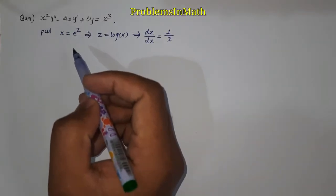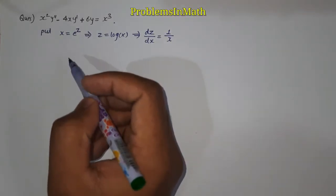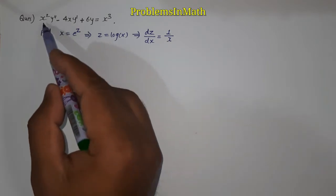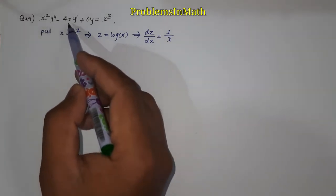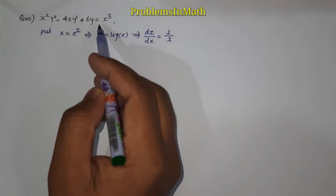Hey guys, today we are going to solve a differential equation question which is written here: x square y double derivative minus 4 x y derivative plus 6 y equal to x cube.